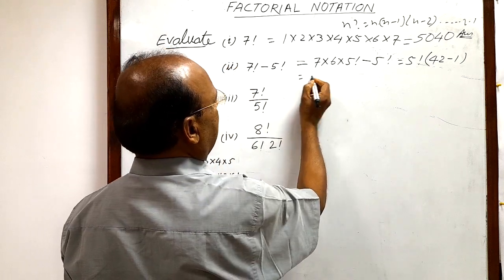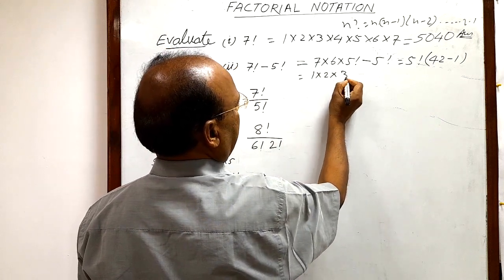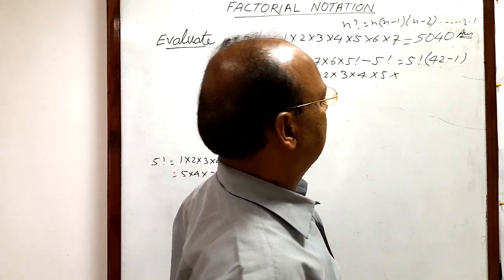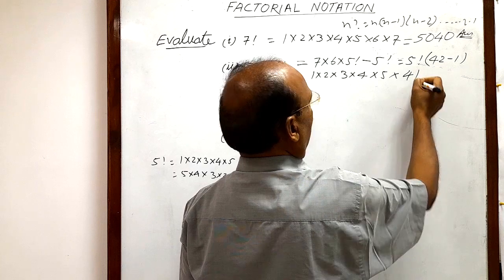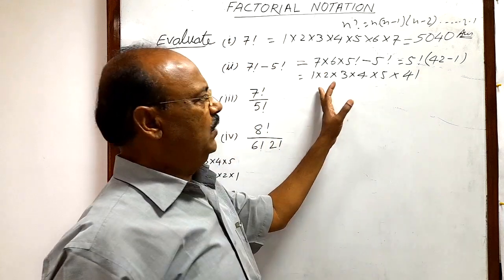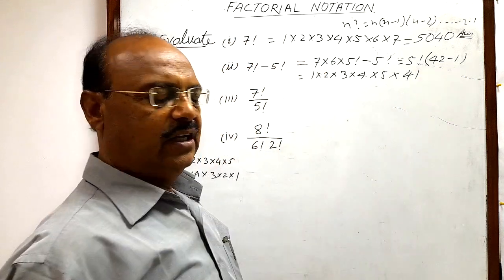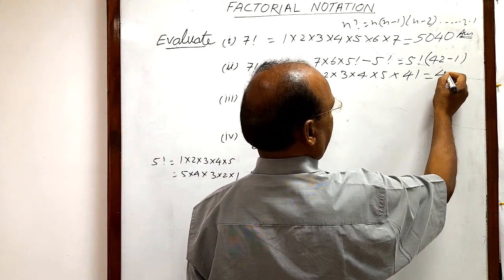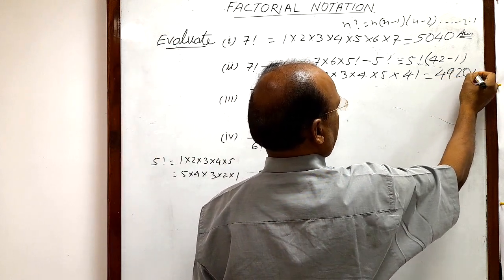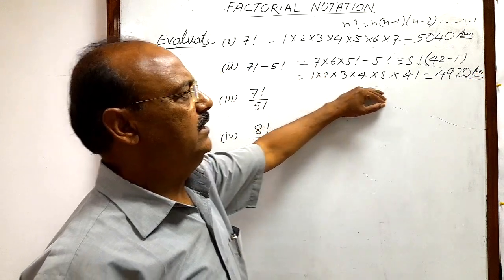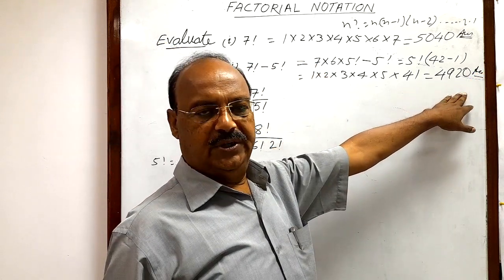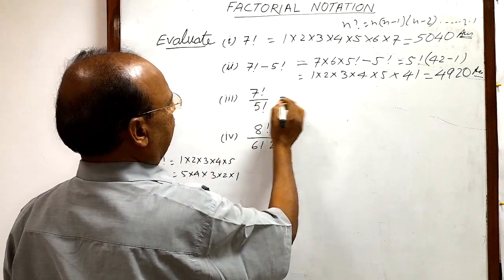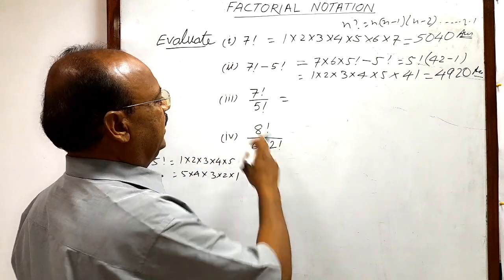So we have 5! × (42 − 1) = 5! × 41. Since 5! = 1 × 2 × 3 × 4 × 5 = 120, we multiply 120 × 41. After multiplying all these factors we get the answer: 7! − 5! = 4920.